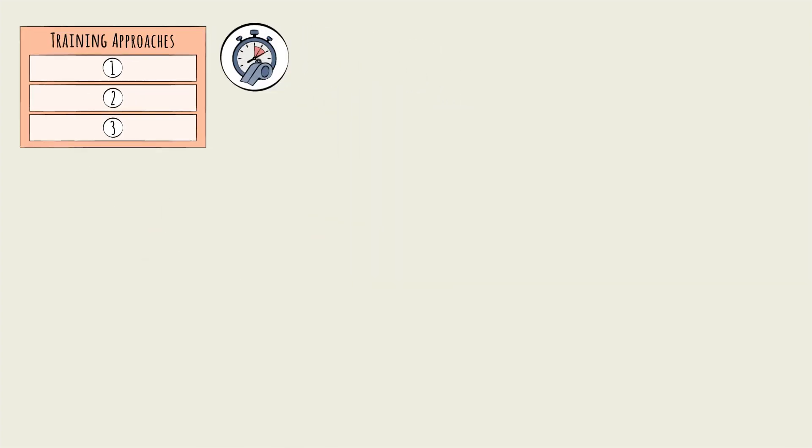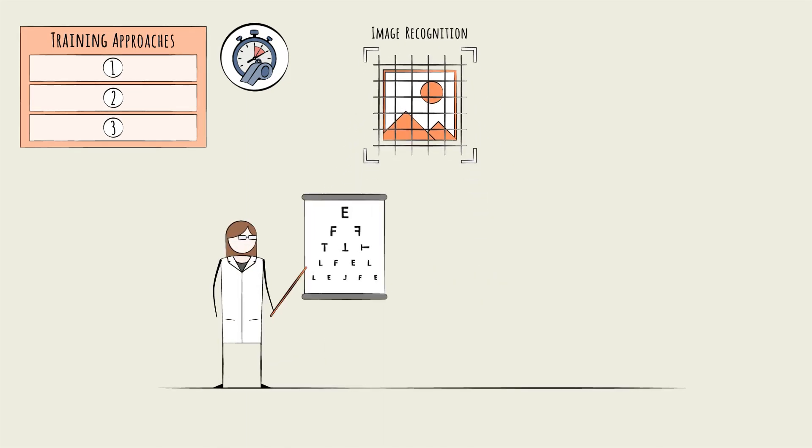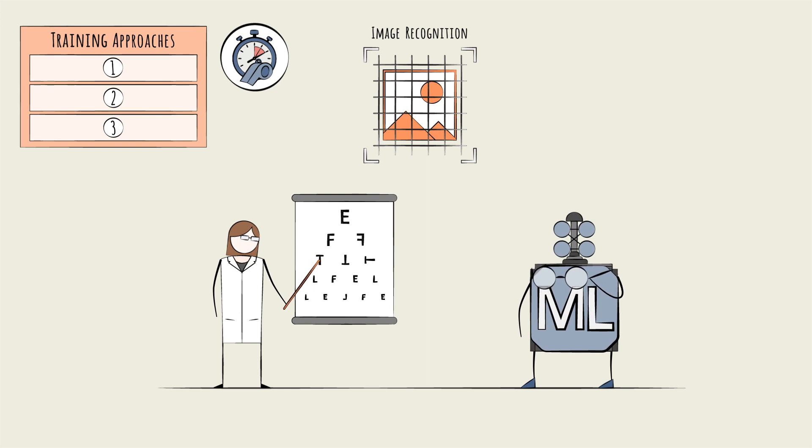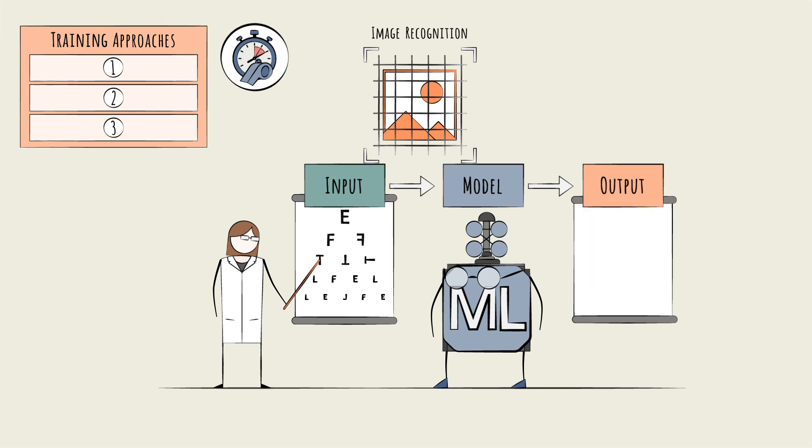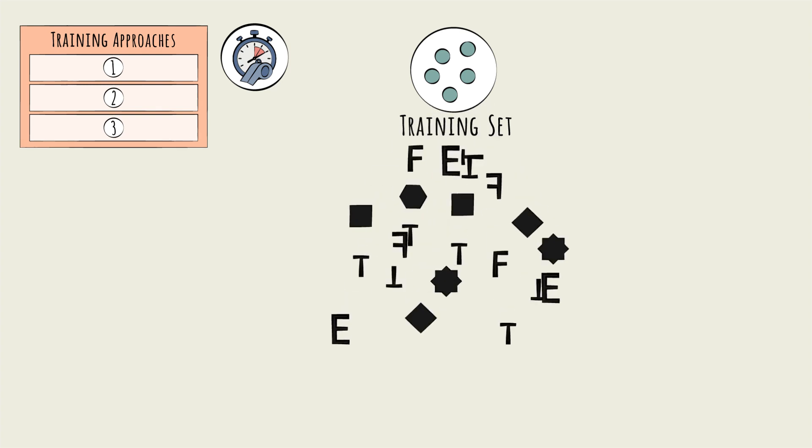To parse the differences in these approaches, let's use an example: image recognition. Say we're building a model to detect the presence of the letter T in a given image. The input is the image file. The output is a determination: T or no T. The training set would be a bunch of sample pictures.